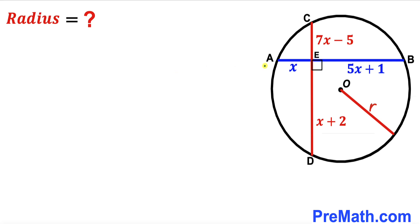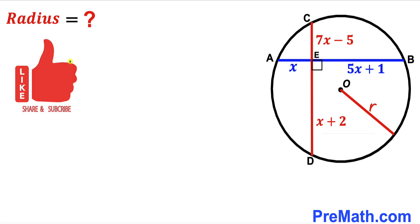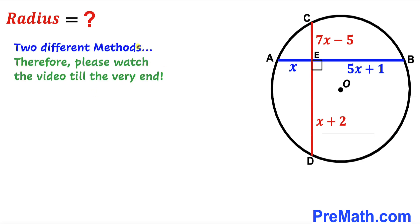Welcome to pre-math. In this video, we have two chords AB and CD that intersect each other at point E inside a circle with center O, as shown in the diagram. Segment AE is represented by x, segment EB is represented by 5x plus 1, segment CE is represented by 7x minus 5, and segment ED is x plus 2. Our task is to calculate the radius of this circle. Note that this figure may not be 100% true to scale. In this video, I'm going to share two different approaches, so please watch till the very end.